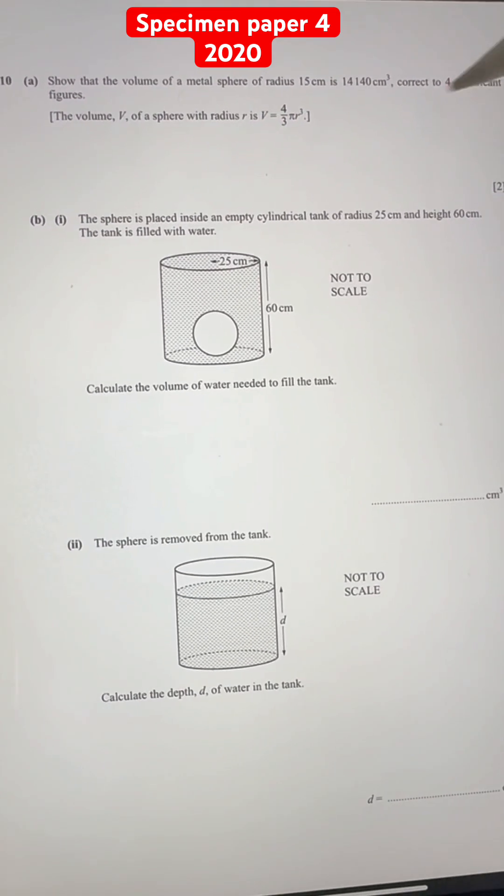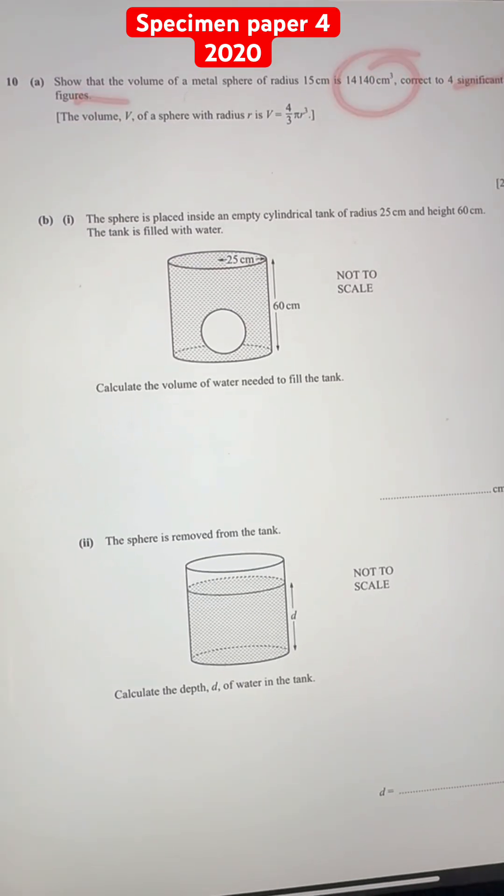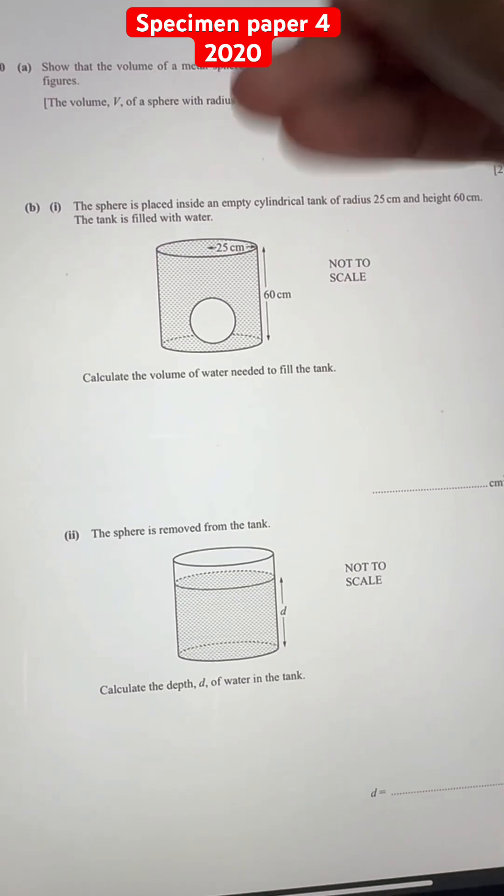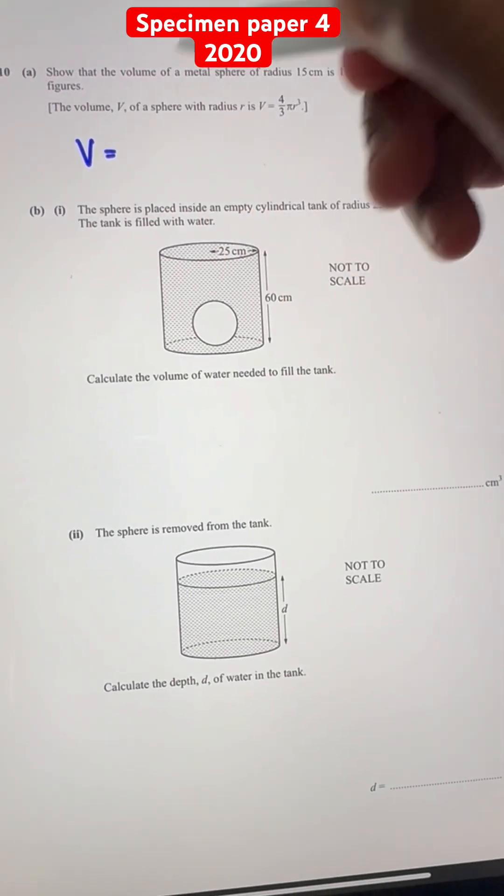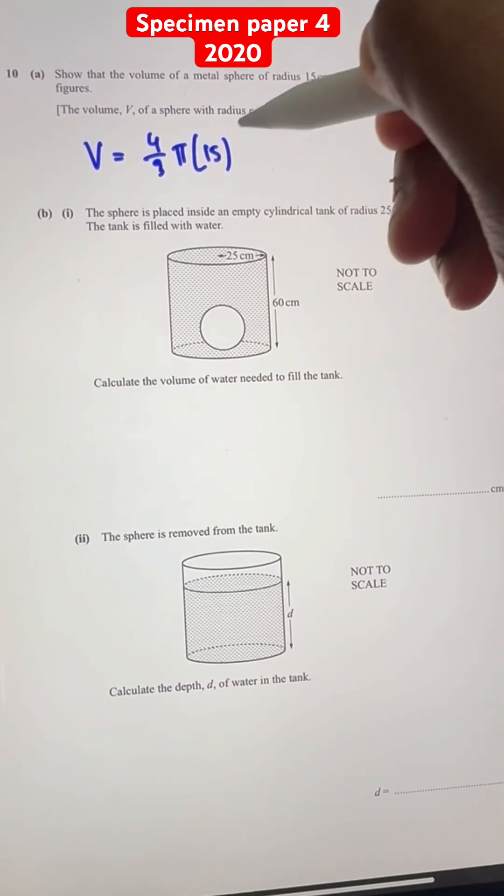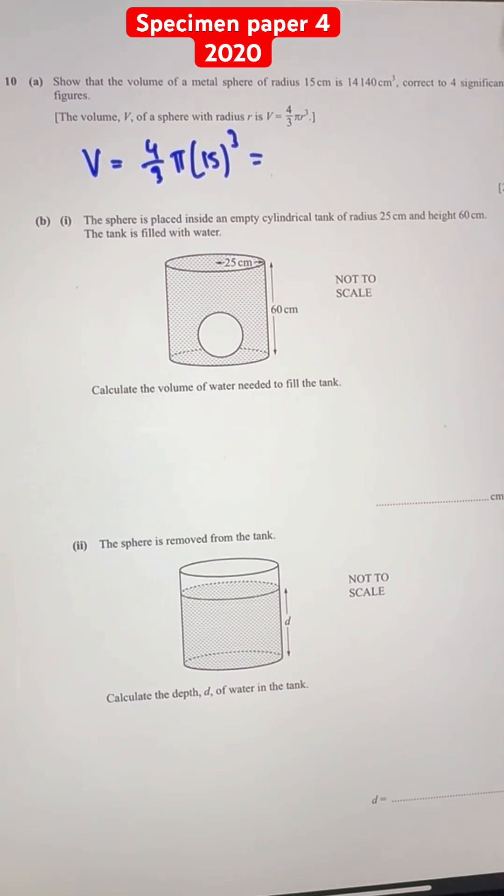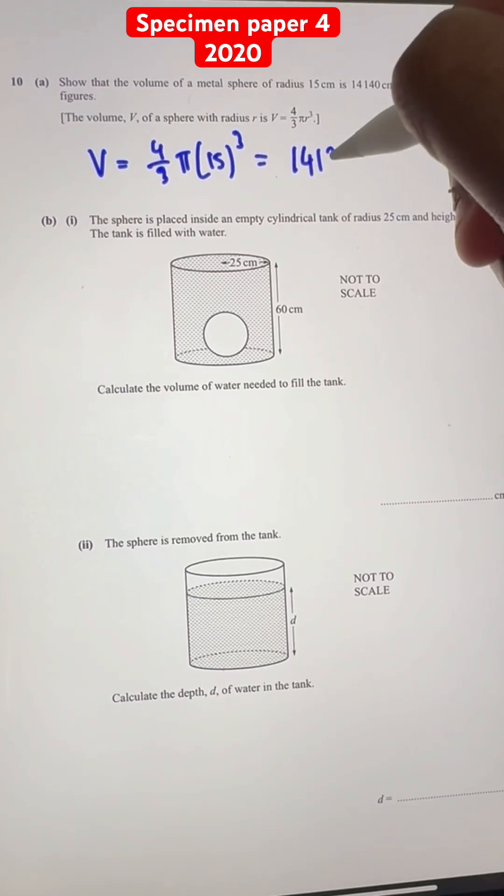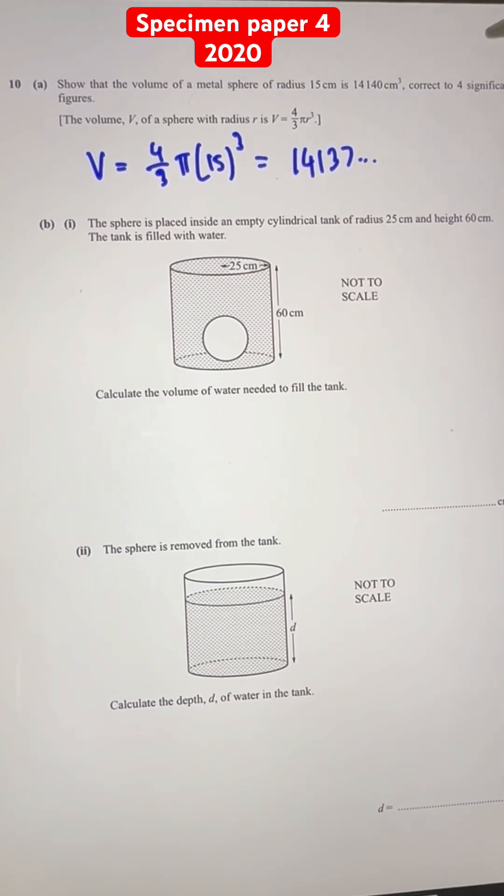And of course we need to round it to 4 significant figures to prove that it is this. So we just get the volume V = 4/3 π times 15³. And when you do this on a calculator, you'll get 14137 point something with decimals.